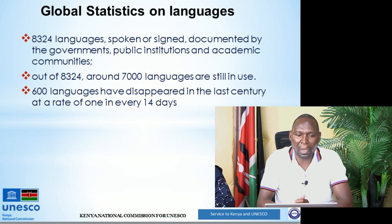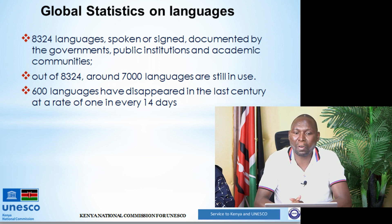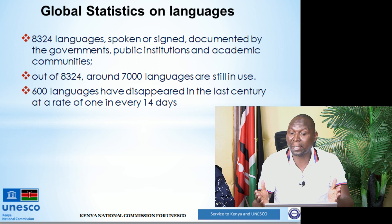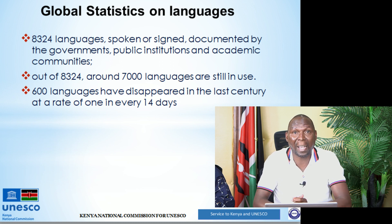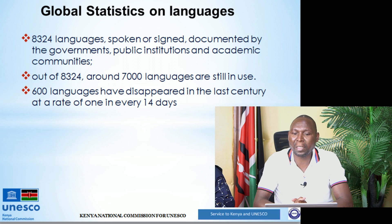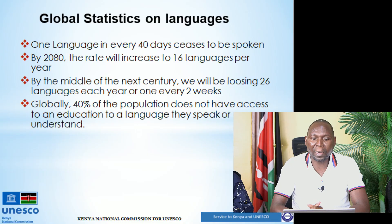On global statistics on languages: there are about 8,324 languages — either spoken or signed — that are documented by governments, public institutions, and academic communities. Of those, around 7,000 are still in use. Of those 7,000 languages, 600 have disappeared in the last century at a rate of one language every 14 days. This is quite alarming — if this continues, we are bound to lose many more languages. One language every 14 days ceases to be spoken.